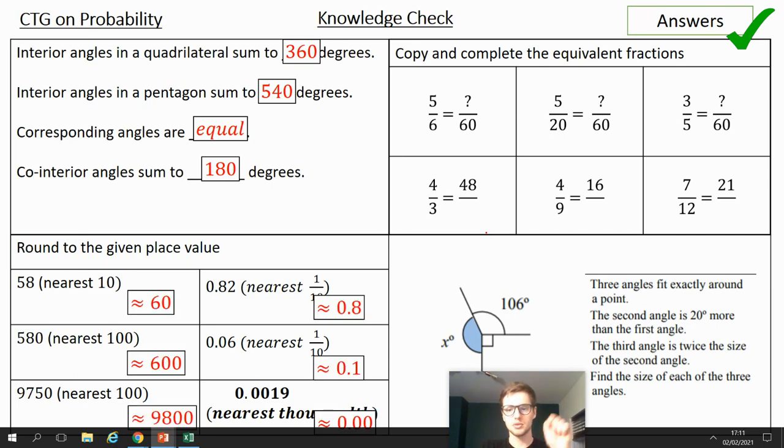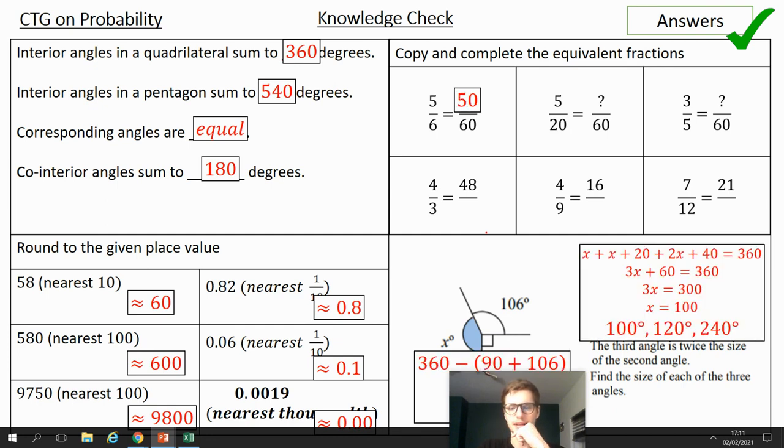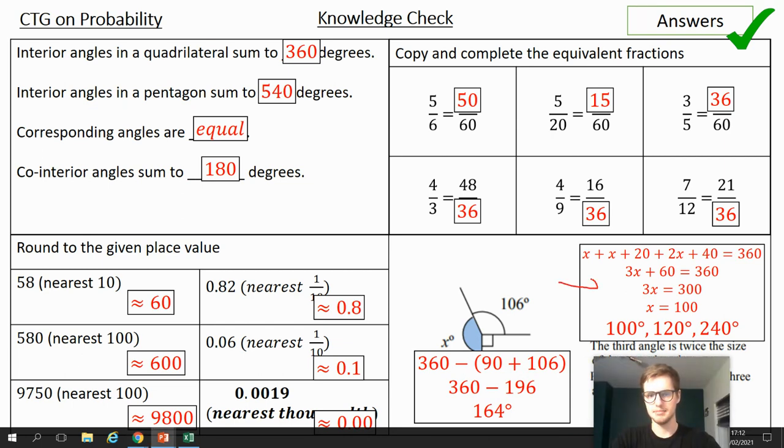Rounding questions on the board. Squiggle equals just means approximately equal to. First equivalent fraction, I'm timesing by 10. 5 times 10, I get 50. Next one, I'm multiplying by 12. 3 times 12, I get 36. The next one, what do I multiply 20 by to get to 60? 20, 40, 60, 3. So I multiply my numerator by 3. 5, 10, 15. Multiply my numerator by 4, multiply my denominator by 4. 9, 18, 27, 36. Final one, what do I times 7 by to get to 21? 7, 14, 21, 3. Denominator by 3. 12, 24, 36. Brilliant. Tick and fix those. Pause the video if you need a little bit more time. This one here, proper chilly. It's excellent to see some of you are getting that.